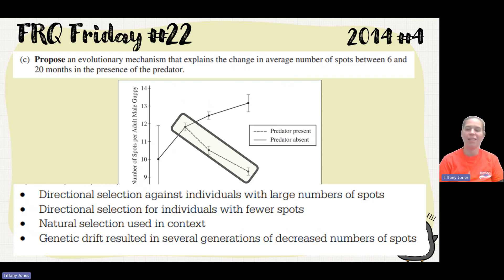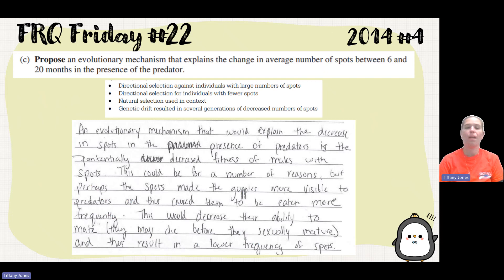So the student says evolutionary mechanism that would explain the decrease in spots in the presence of predators is potentially decreased fitness of males with spots. This could be a number of reasons, but perhaps the spots made the guppies more visible to predators and then caused them to be eaten more frequently. This would decrease their ability to mate. They would die before sexually mature and thus result in a lower frequency of spots.